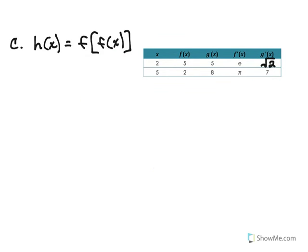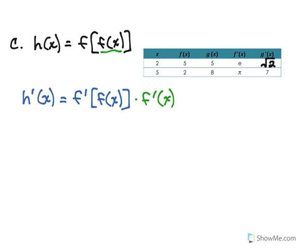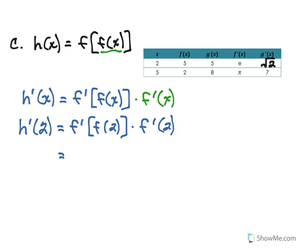In this last example, the function h is defined as f of f of x. Starting on the outside, we have f prime of f of x — one derivative at a time — and then multiply by the derivative of the inside function, f prime of x. Remembering that we want to find h prime of 2, we fill in 2. From the table, f of 2 is 5.